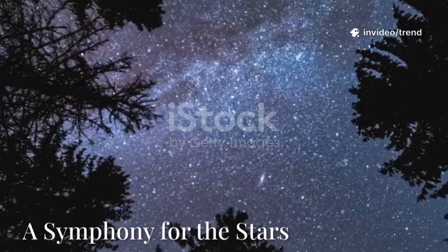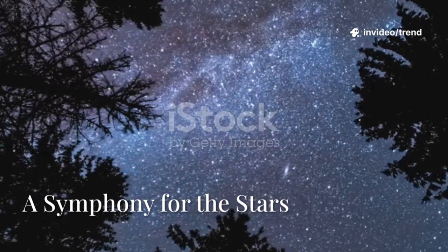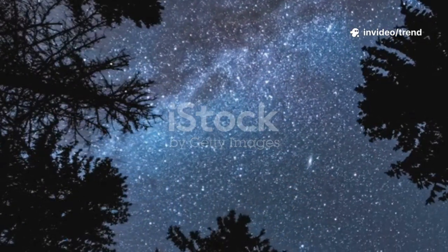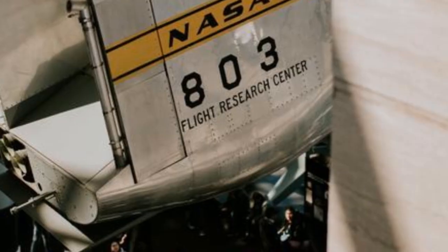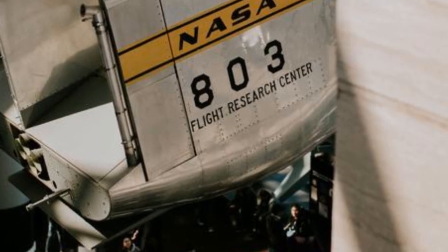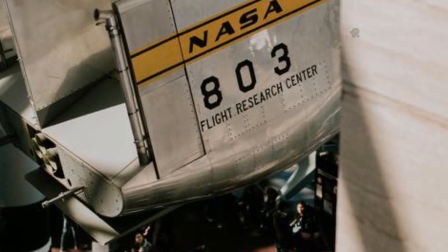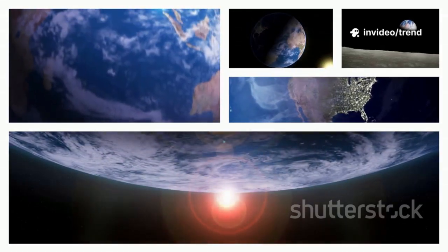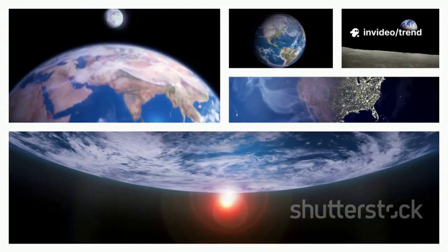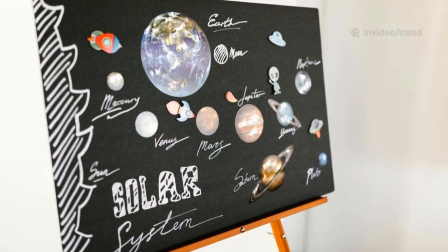What would you say to an alien? Voyager 1 carries our answer: the Golden Record. This 12-inch gold-plated disc is a time capsule of Earth, created by a team led by Carl Sagan. It holds 115 images - mountains, oceans, animals, and people from every corner of our world. There are diagrams of our solar system, our DNA, and scenes of daily life.